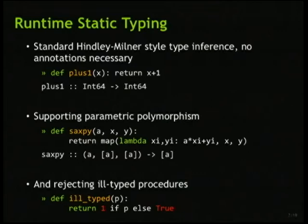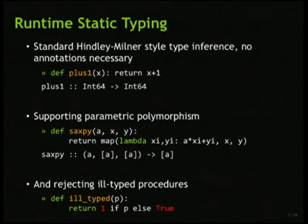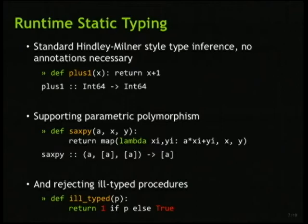How does our type system work? We use a standard Hindley-Milner style type inference system. No annotations are necessary. So if you have a function that returns x plus 1, we're going to type that as a function that takes a 64-bit integer and returns a 64-bit integer. It's 64-bit because the default type we infer for that integer literal 1 is going to be a 64-bit integer, unless you tell us you want it to be some other kind of scalar value. We support parametric polymorphism. So in our earlier example where we're adding two vectors, the type inferred would be a function that takes a scalar of some type, and then two sequences of that type, and returns a sequence of that same type. We will reject any program that doesn't type check.